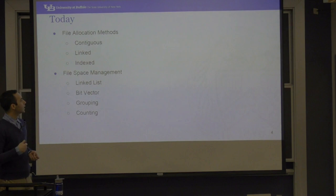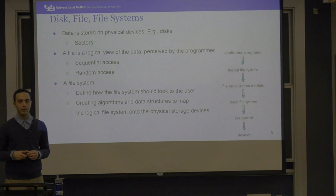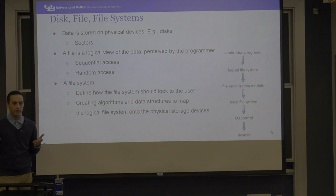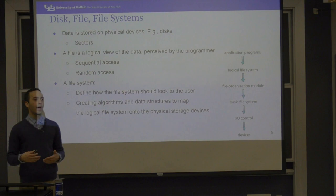Today we're going to talk about file allocation methods on disk and files, and free space management. A little bit of background: when we talk about a disk, we're talking about a secondary storage device — such as magnetic disk, hard drives, flash drives, SSD, or other means of persistent storage.